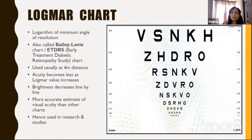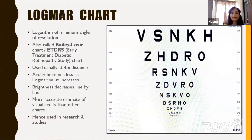Now we come to another chart gaining popularity, especially in research and studies, because of its more accurate estimate of visual acuity — the LogMAR chart, or logarithm of minimum angle of resolution. It is also called the Bailey-Love chart and is known as the ETDRS chart because it was used in the ETDRS study. Standard testing distance is four meters, but nowadays digital LogMAR charts can be adjusted to two meters, three meters, etc.